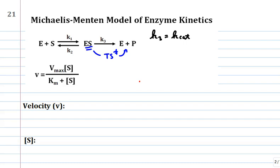If you take the Michaelis-Menten model, another thing we know is that when a substrate goes through the transition state through to the product, you regenerate the enzyme — the enzyme can go back and do it again. We call this turnover. Enzymes have multiple turnovers until the enzyme is degraded, and we're making new enzymes all the time anyway.